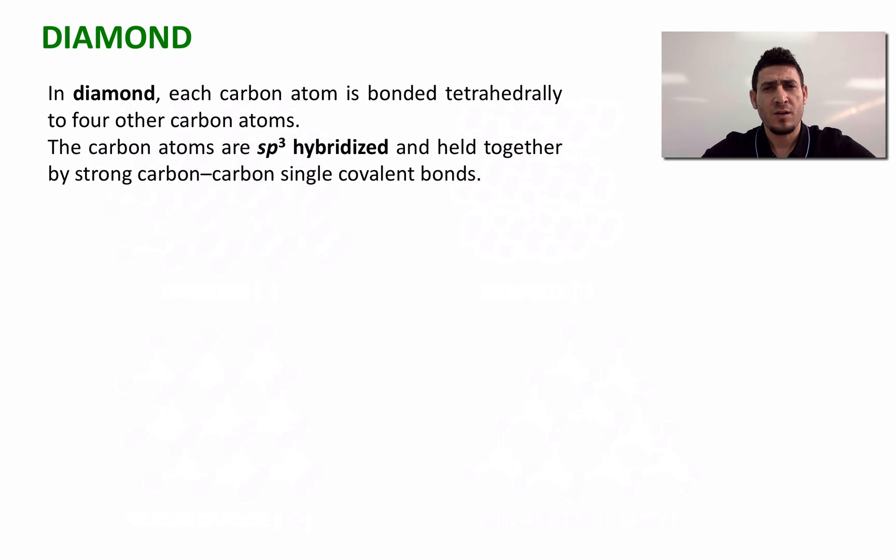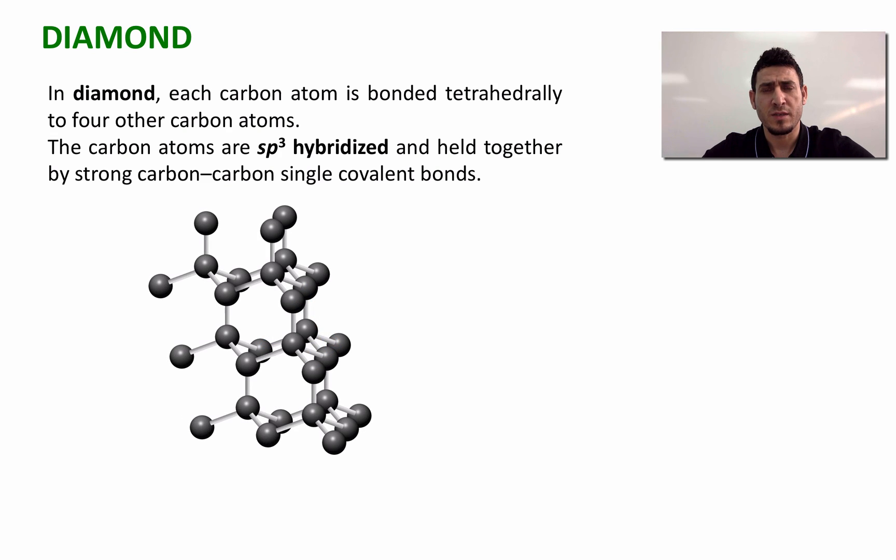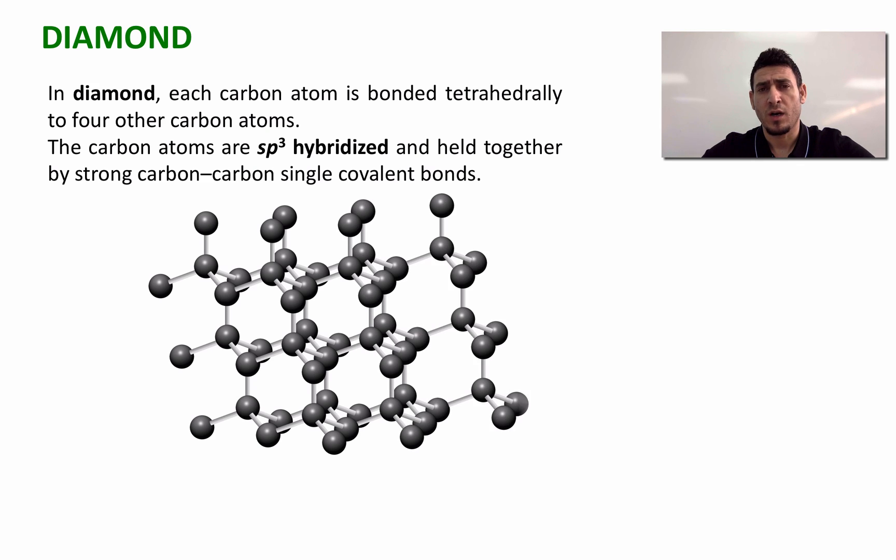Let's start by discussing diamond, where each carbon atom in diamond is bonded tetrahedrally to four other carbon atoms. Since the geometry around each carbon atom is tetrahedral, the hybridization around these atoms will be sp3. Each carbon atom will be connected to four different carbons, and this is going to form a very structured solid which we call crystals.